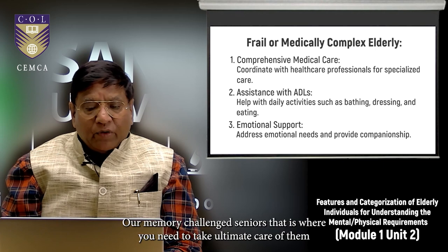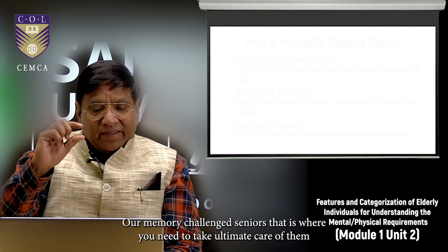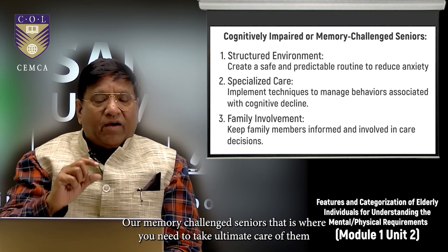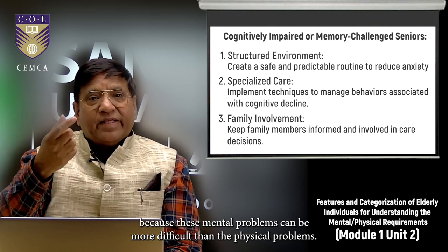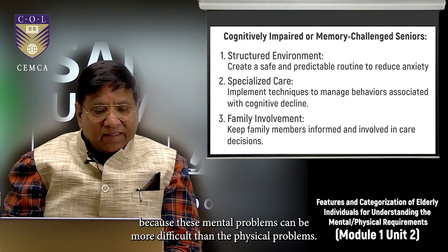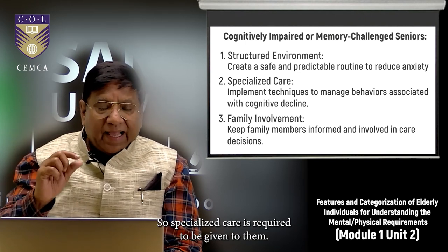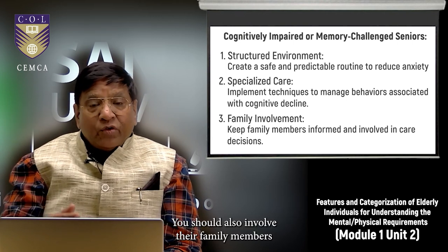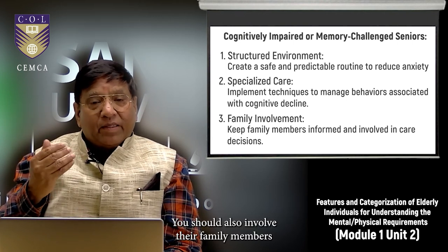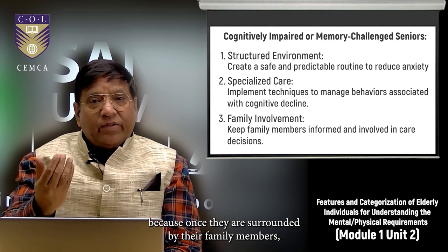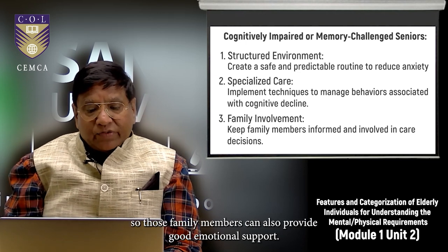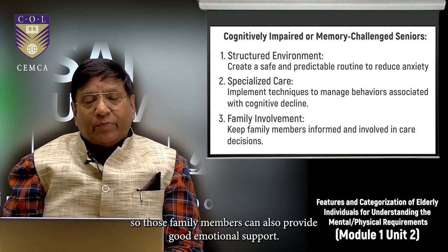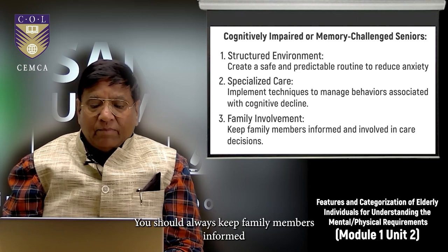For cognitively impaired or memory-challenged seniors, take ultimate care as mental problems can be more difficult than physical ones. Specialized care is required. Involve family members, as their presence provides good emotional support. Always keep family members informed and involved in care decisions for these individuals.